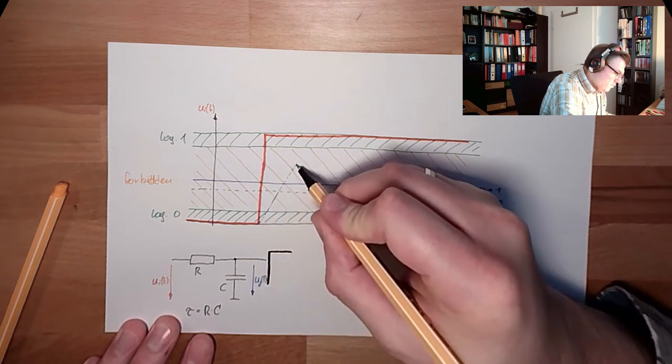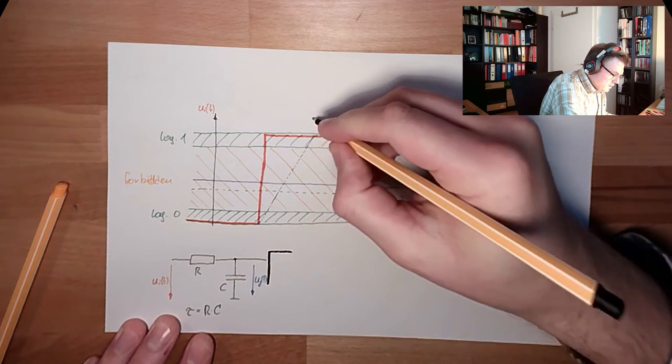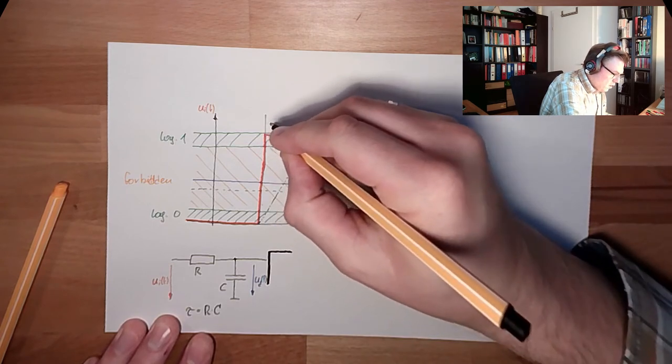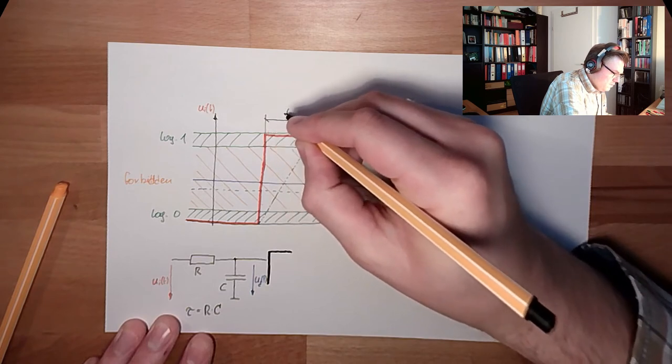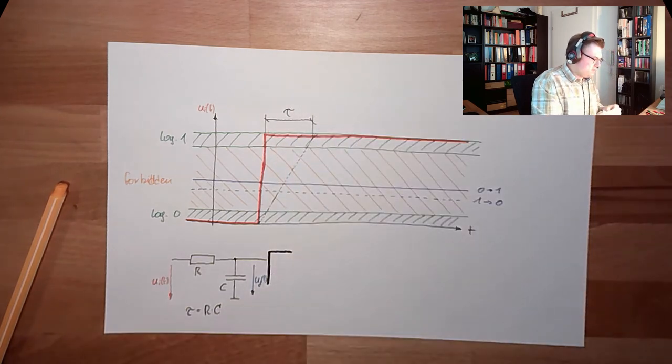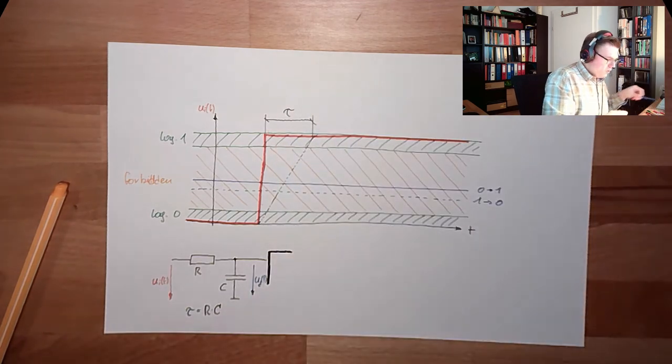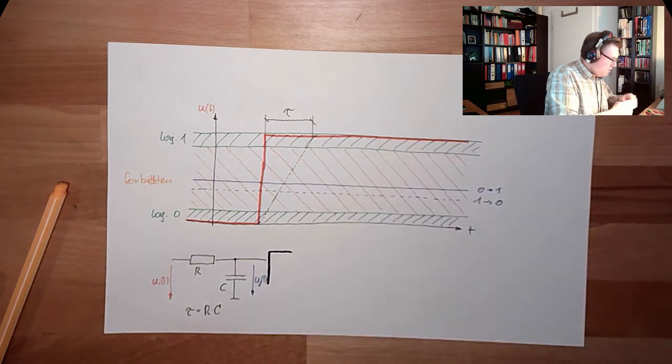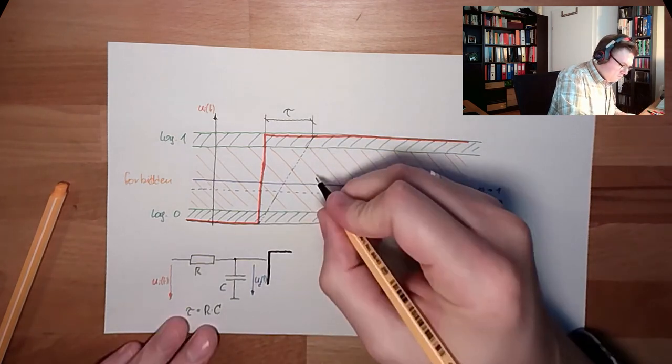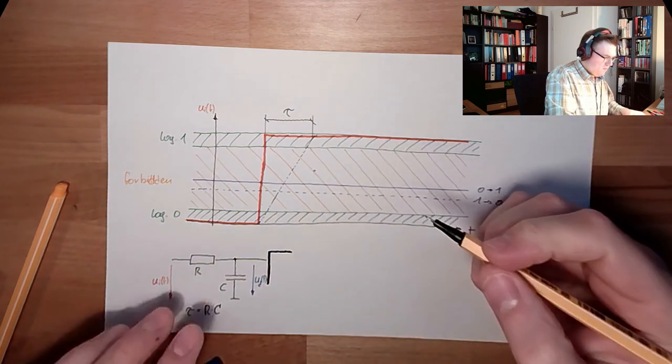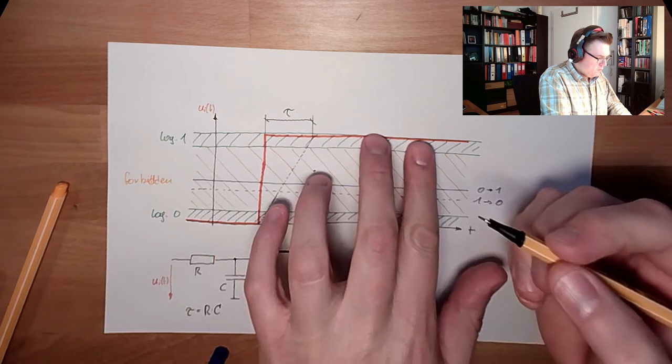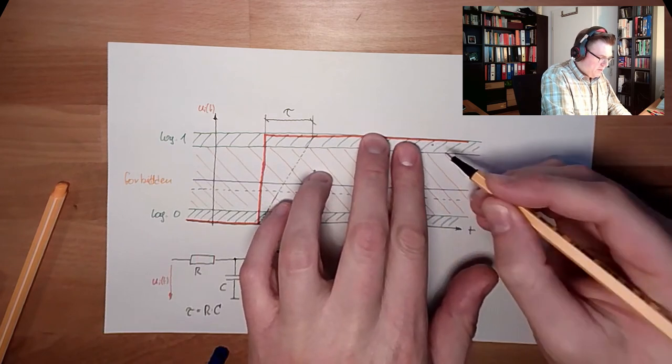Here, if I draw here, the time constant T Tau. The charge of this capacitor would look like exactly after the time constant, we are at around 63 percent charge. One, three, after three, we are pretty much here. And after five, we are at the top.